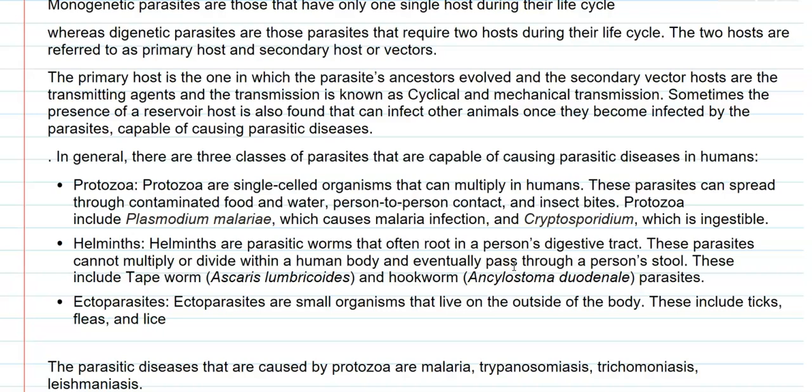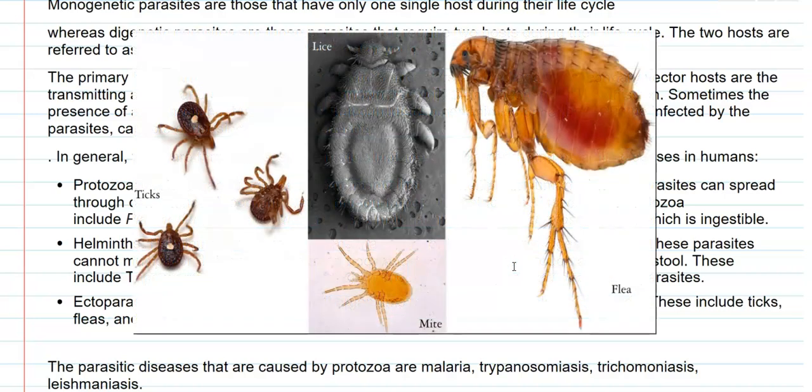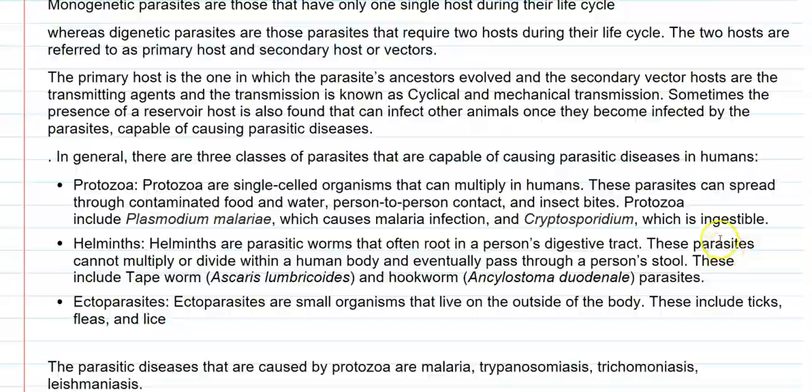The last group is the ectoparasites. These are organisms, as we have already seen, that live outside the body. This includes ticks, fleas, and lice.